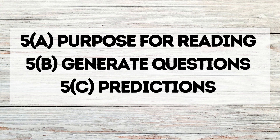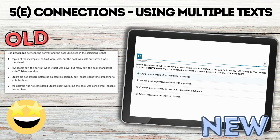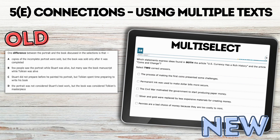I did not find any new item types or questions on purpose for reading, generating questions, or making predictions. Then looking at connections or connecting multiple texts, there were a lot of questions like this, and a lot of them were multiple choice similar to the old tests, where they simply asked for the difference or similarity. But I also saw some multi-select questions here, where students had to select multiple ideas that connect or compare two passages together.